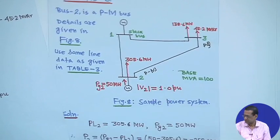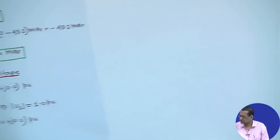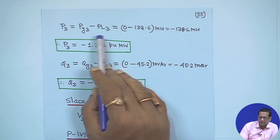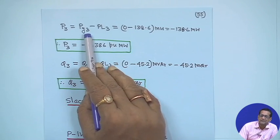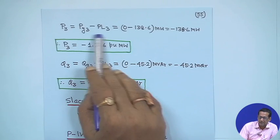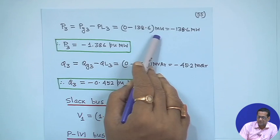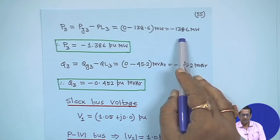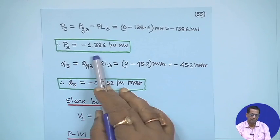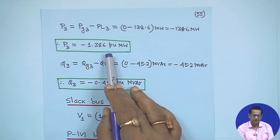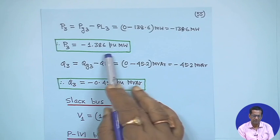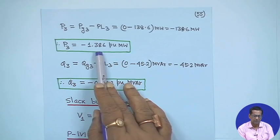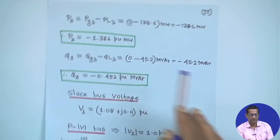This is again a 3-bus problem. P₃ equals P_G3 minus P_L3. There is no generator at bus 3, so P_G3 is 0. Therefore P₃ equals minus 138.6 megawatt, which divided by 100 MVA base gives minus 1.386 per unit. For Q₃, Q_G3 minus Q_L3 gives minus 45.2 megawatt, or minus 0.452 per unit.